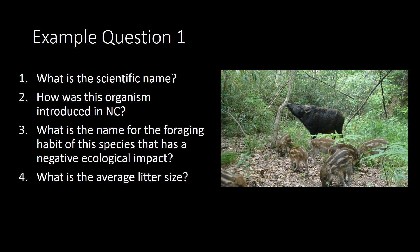This picture depicts a feral hog — the scientific name is Sus scrofa. There are many common names, but the scientific name is Sus scrofa. How was it introduced in North Carolina? It was imported as a food source, brought over as a domestic animal and then escaped or was released, which is believed to have happened in the 1500s. The name for the foraging habit that creates damage and has a negative ecological impact is called rooting. The average litter size is four to six.